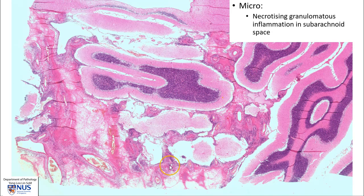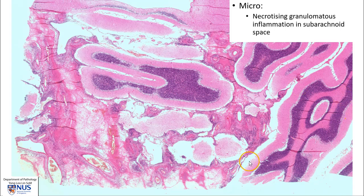Microscopically, within the subarachnoid space, we will see the characteristic inflammatory picture of TB, which is that of necrotizing granulomatous inflammation. Here we can see again at low magnification the cerebellar parenchyma, and this is the markedly expanded subarachnoid space, which contains lots of blood vessels as well as necrotizing granulomatous inflammation.